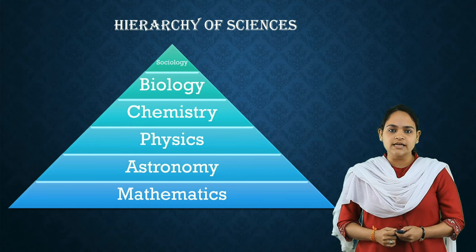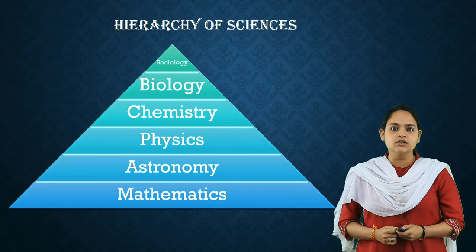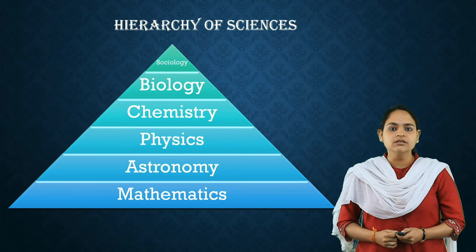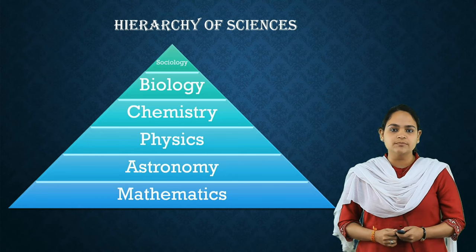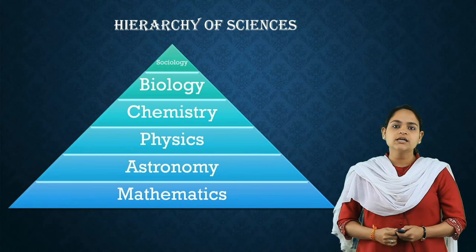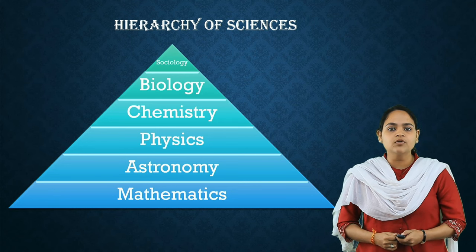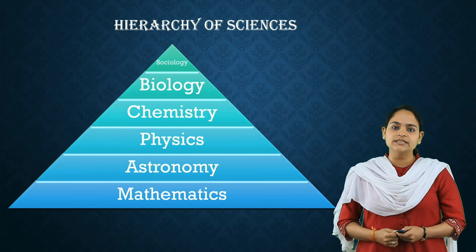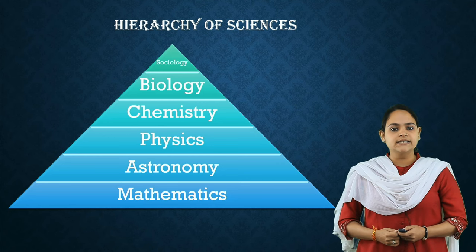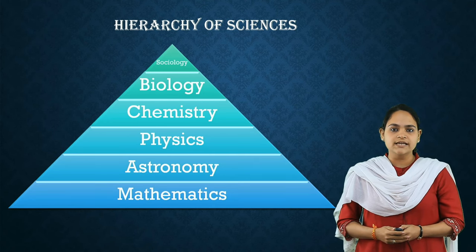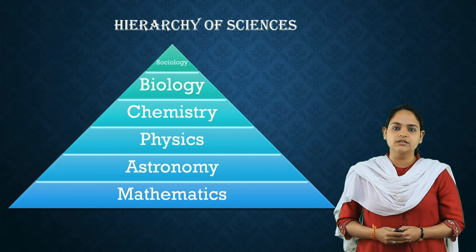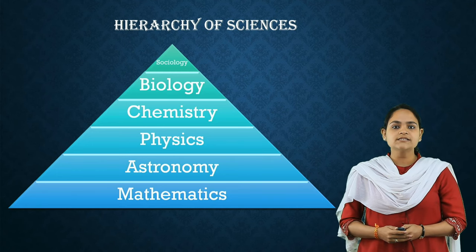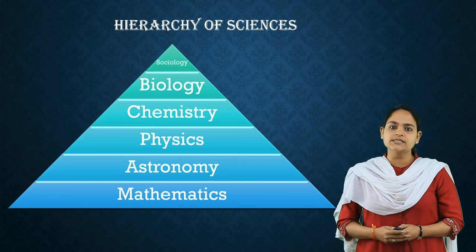Comte's theory of the hierarchy of sciences is connected with the theory of the law of three stages. According to him, mathematics and astronomy, which he considers the most general and simple of all natural sciences, develop first. In time, it is followed by physics, chemistry, biology, and finally sociology. Each science develops with the principle of increasing complexity and decreasing generality. He argues that social sciences offer the completion of the positive method, whereas the natural sciences are preparatory stages for the same.